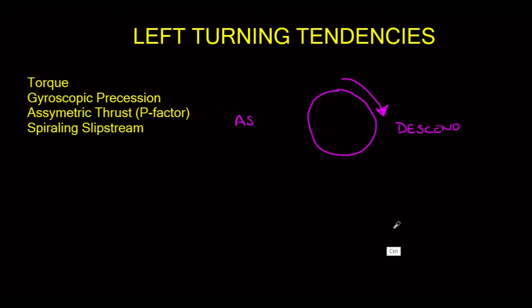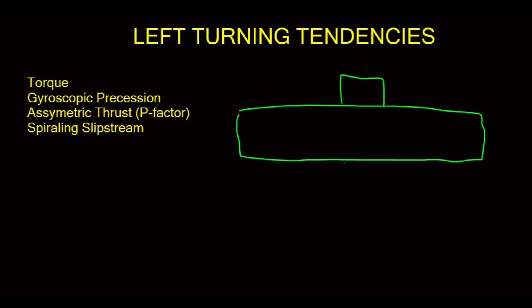Last one is our spiraling slipstream. This one is pretty easy to understand. I'm going to draw a perfectly symmetrical wing with our cowling. And here is the back.